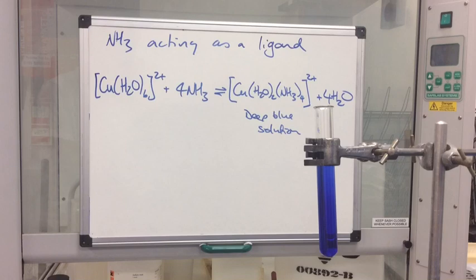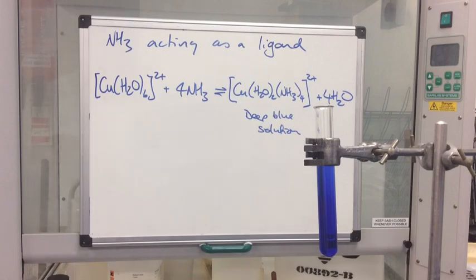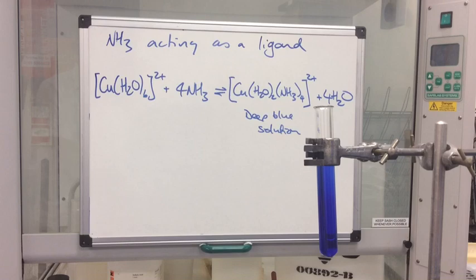If the ammonia were in a very high concentration, all six water molecules would be substituted, giving what's called the copper hexa amine 2+ ion, which has a different colour — I think it's purple. However, for the OCR specification, the reaction with four ammonia ligands is the one they want you to discuss, so in practice that is the reaction we use.